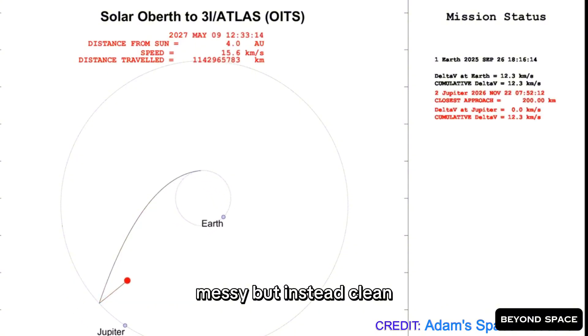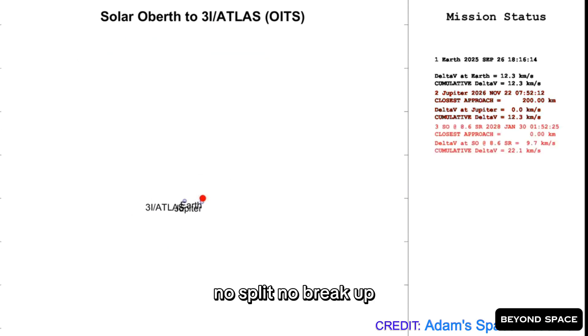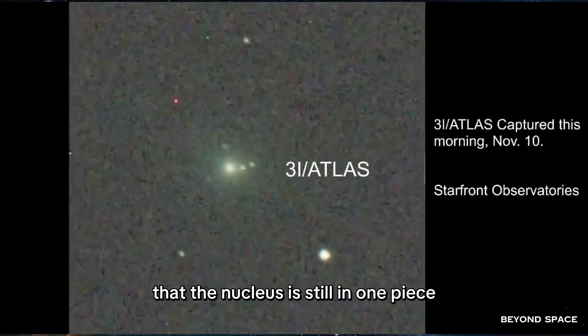Messy. But instead, clean, symmetric, centered. No split. No breakup. This is the strongest evidence yet that the nucleus is still in one piece.